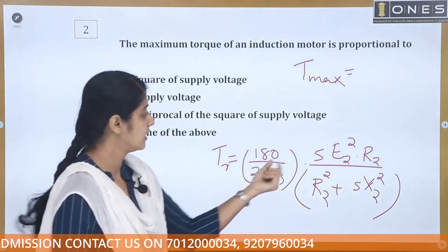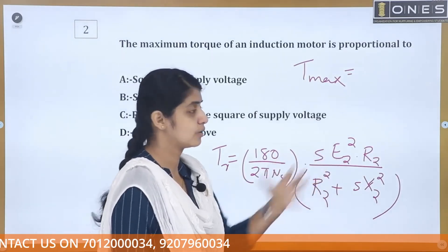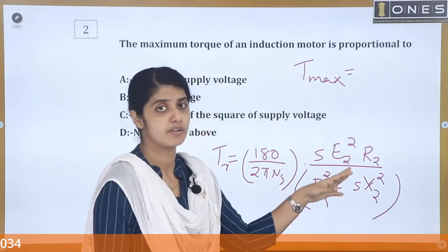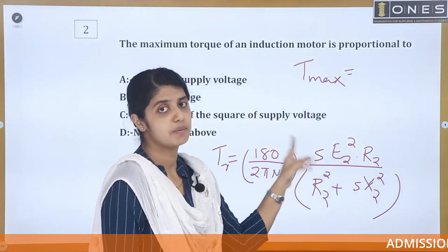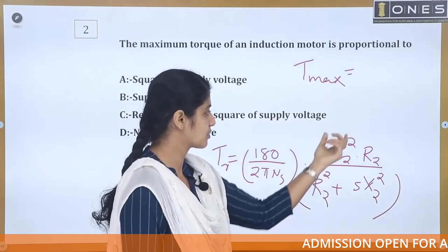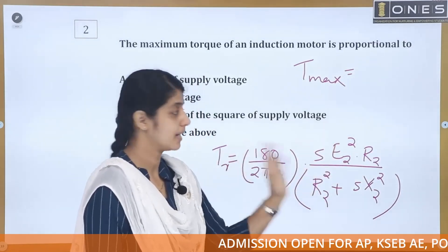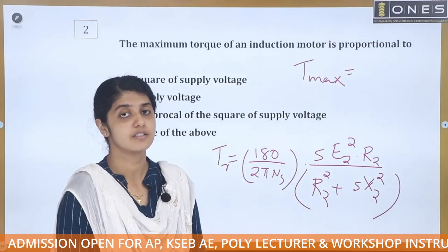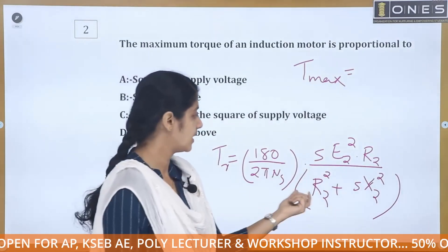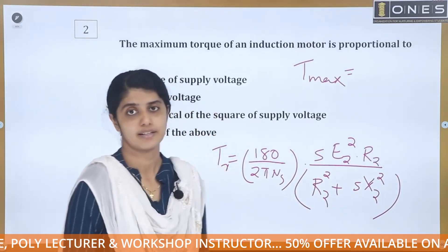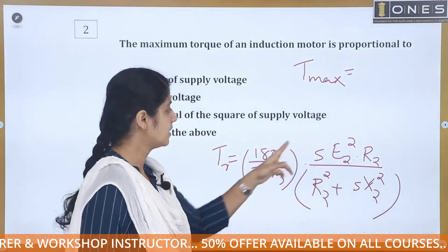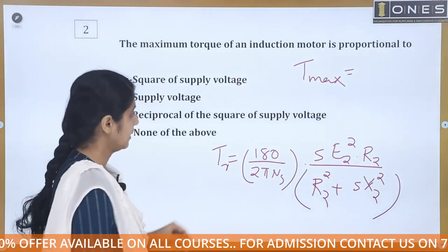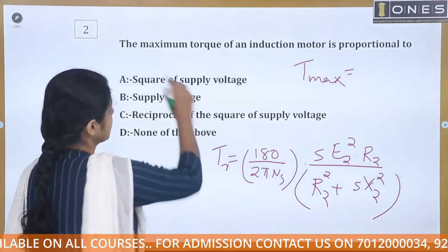In the torque equation, Ns is the synchronous speed, S is the slip, E2 is the rotor EMF which is proportional to the supply voltage, R2 is the rotor resistance, and X2 is the rotor reactance.